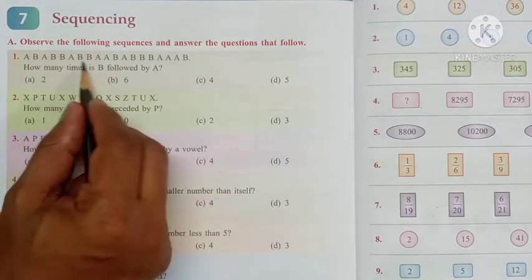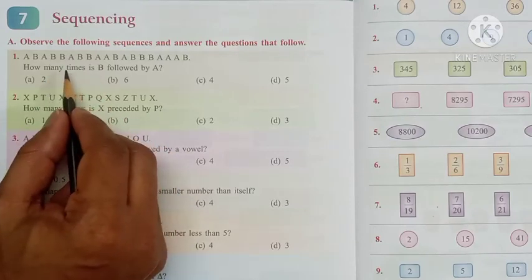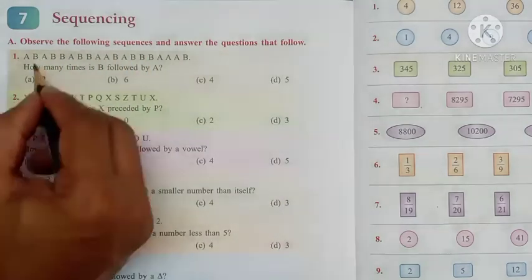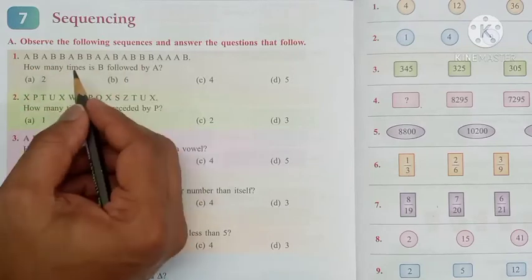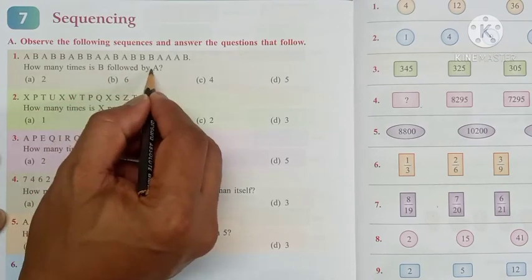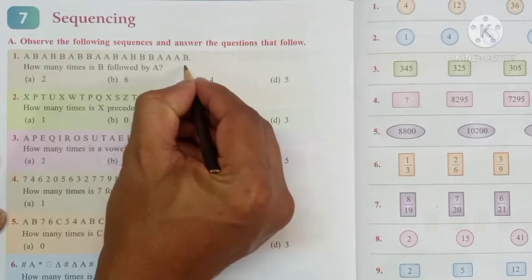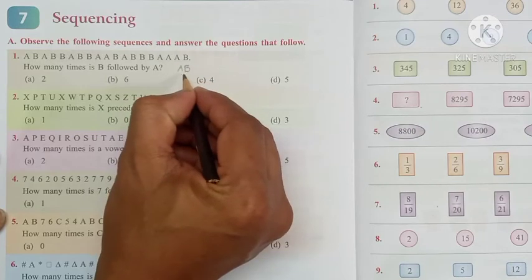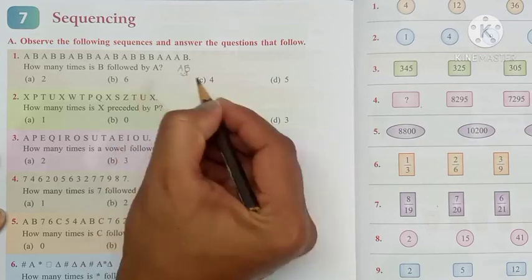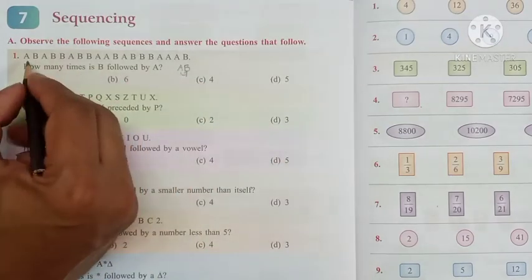They will give a clue at the bottom of each sequence and by following it we have to track the answer. Observe the following sequences and answer the questions that follow. So they gave a sequence A, B, A, B, etc. like that. The question is how many times B is followed by A. That means we have to check for the sequences like this - B is followed by A. I hope you got the answer children. So we have to check for this kind of combinations in the given sequence.